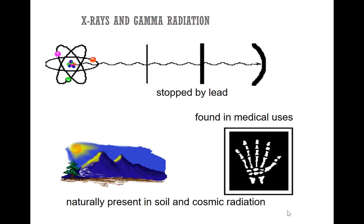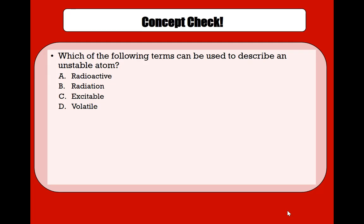Finally, x-rays and gamma rays, as we saw, are the most penetrating. They can be stopped by lead as well as thick layers of concrete. They have tremendous uses in medicine and are present in natural soil and also in cosmic radiation.